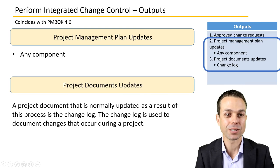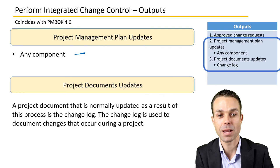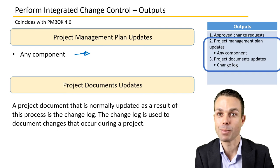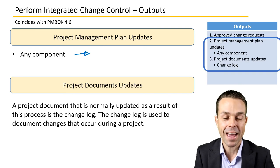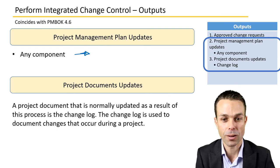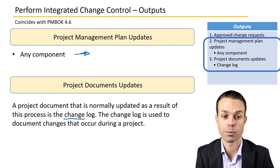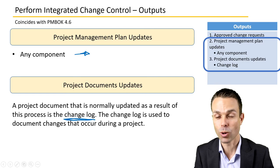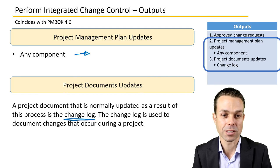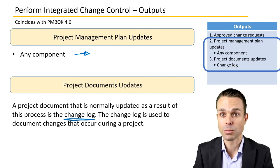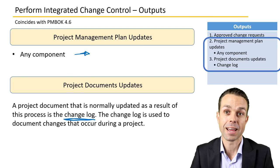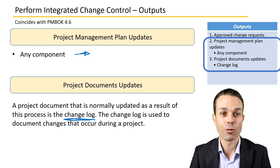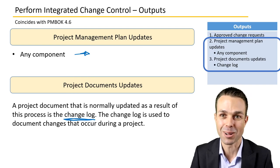There may be a log of changes where, for example, 10 changes have been requested, five have been approved and five have been rejected — all need to be documented so we understand what changes have been requested over the life of the project. Any part of the project management plan can be updated, as can project documents. The change log is the biggest document that will be updated, but other items can be changed as well. And that's Perform Integrated Change Control as part of the project management body of knowledge.